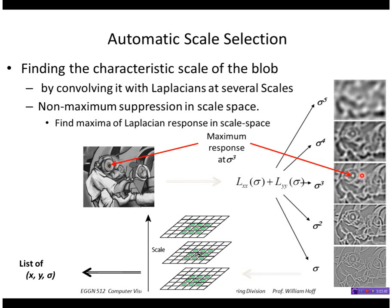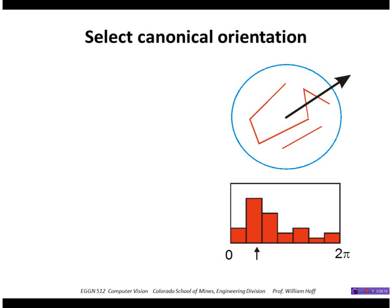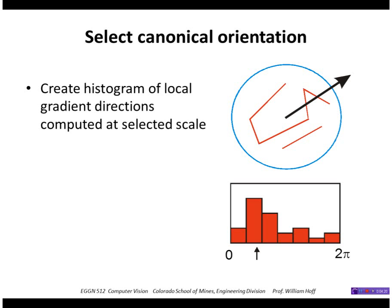Here is an example of finding the blob corresponding to a feature, which has its peak at a particular value of Sigma. We can also localize the peak more precisely within the image by fitting a quadratic surface to the values in the neighborhood and then finding the peak of that surface, giving sub-pixel precision of the location of the peak.